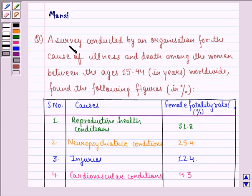The question says: a survey conducted by an organization for the cause of illness and death among the women between the ages 15 to 44 in years worldwide found the following figures in percentage.